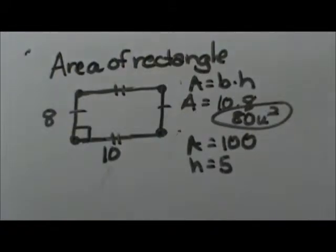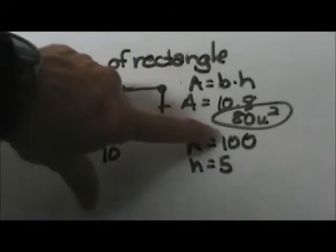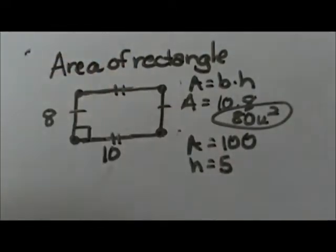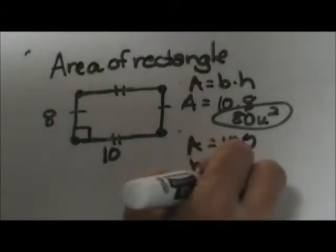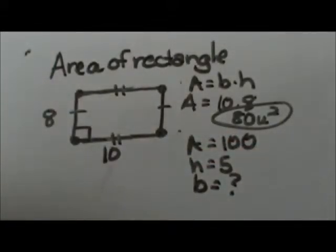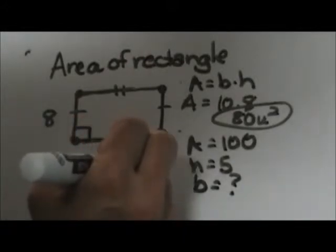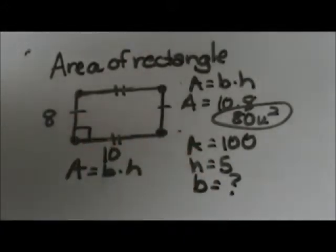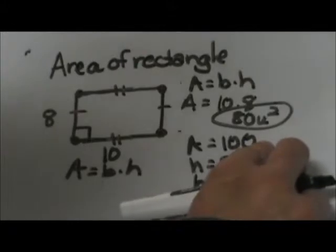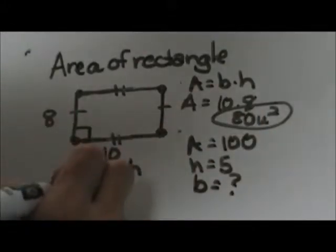But what happens if you have to work backwards? You're given an area and the height but you don't know what the base is. You're going to write down your formula: area equals b times h. You're going to plug in what you do know. We know the area is 100, so let's put 100 here.